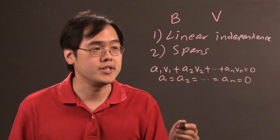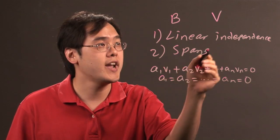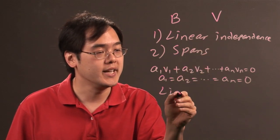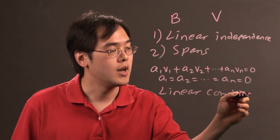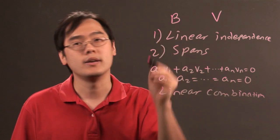To show that the span criterion holds, you have to show that every element in V is a linear combination of all the elements in set B.